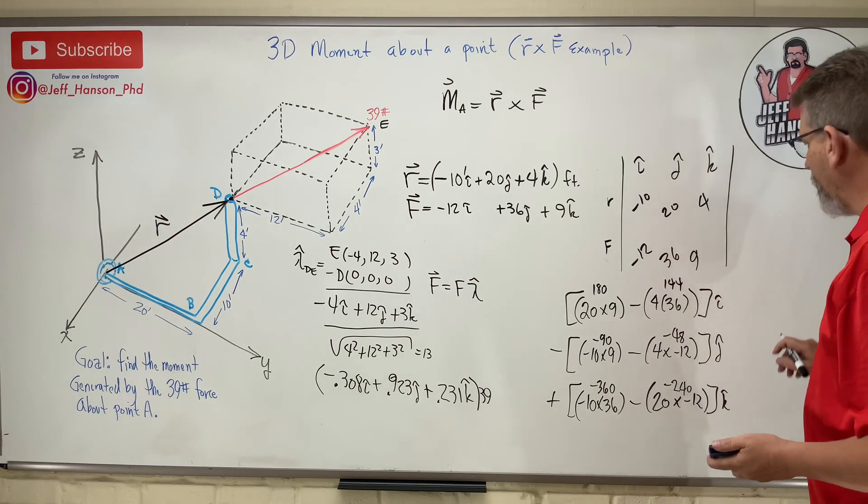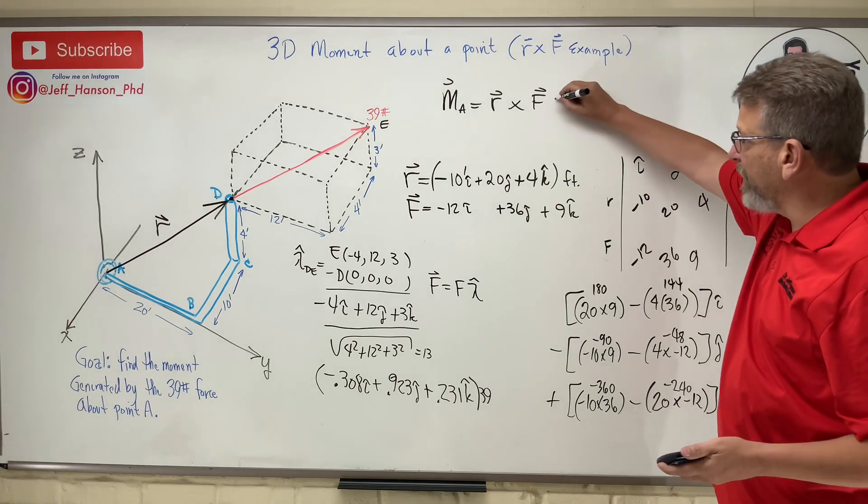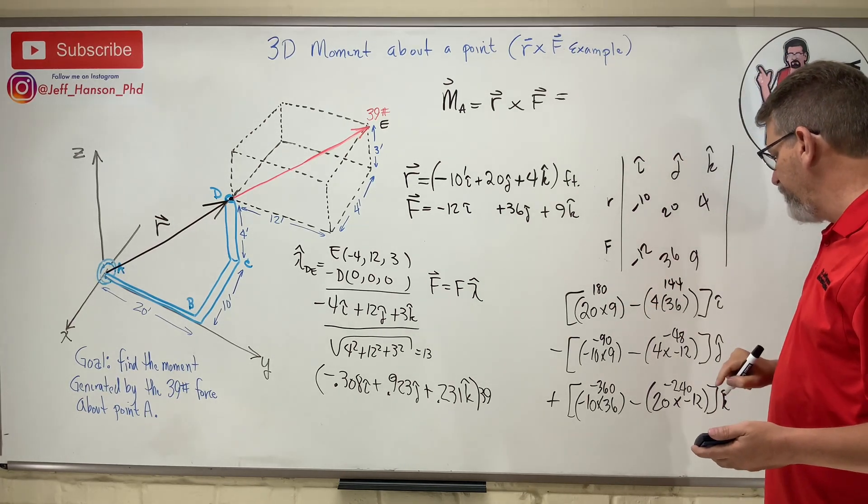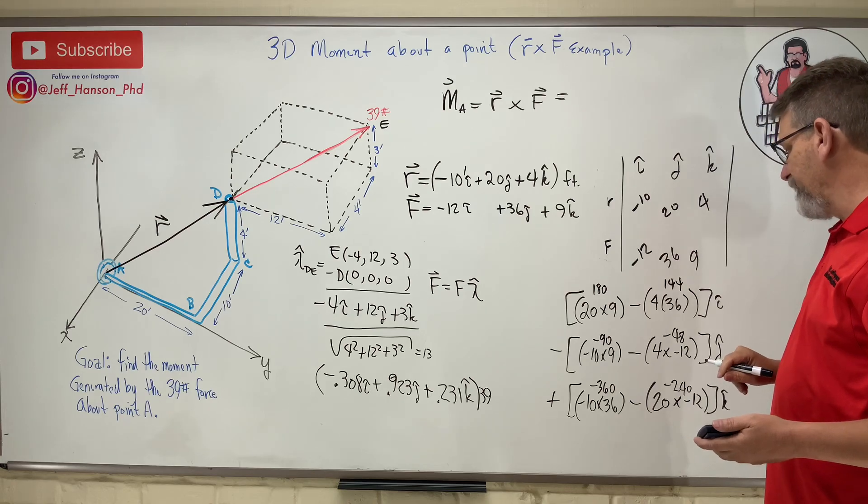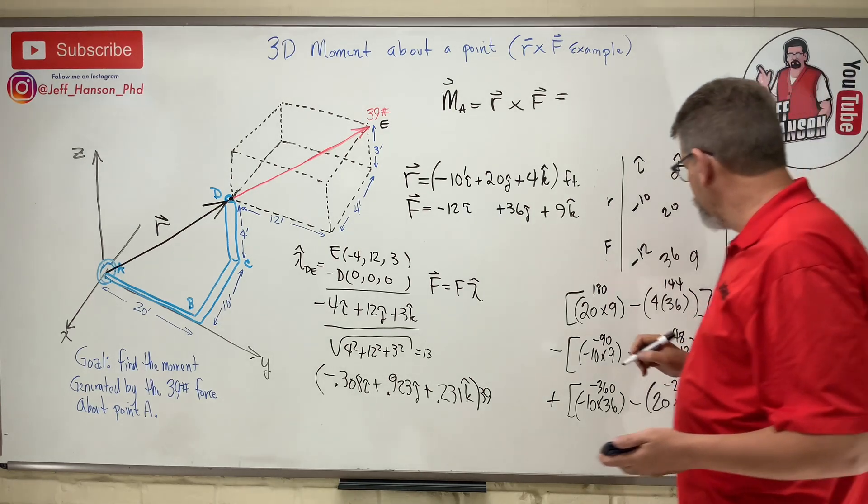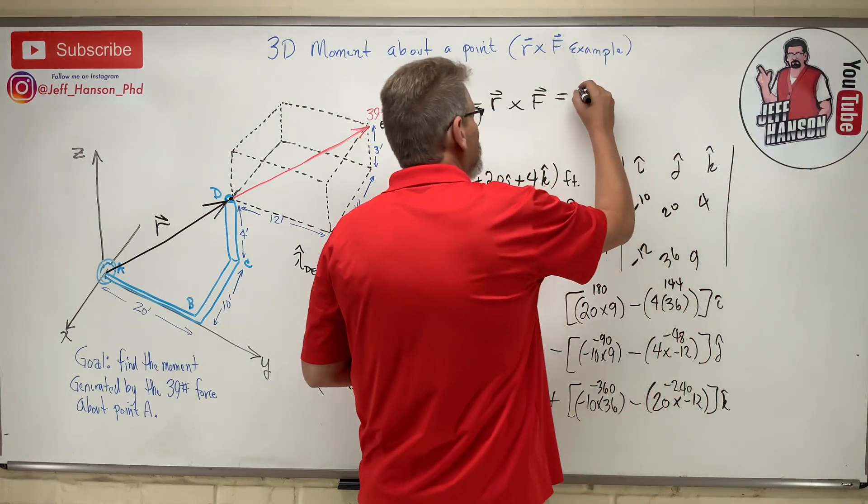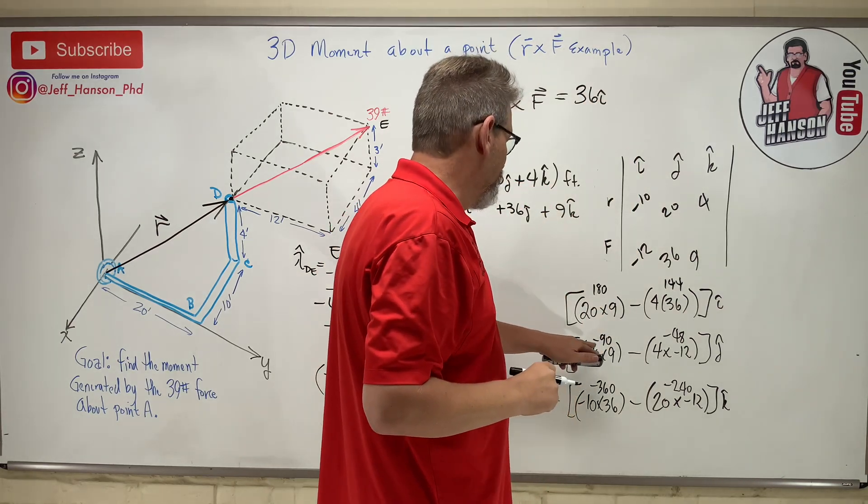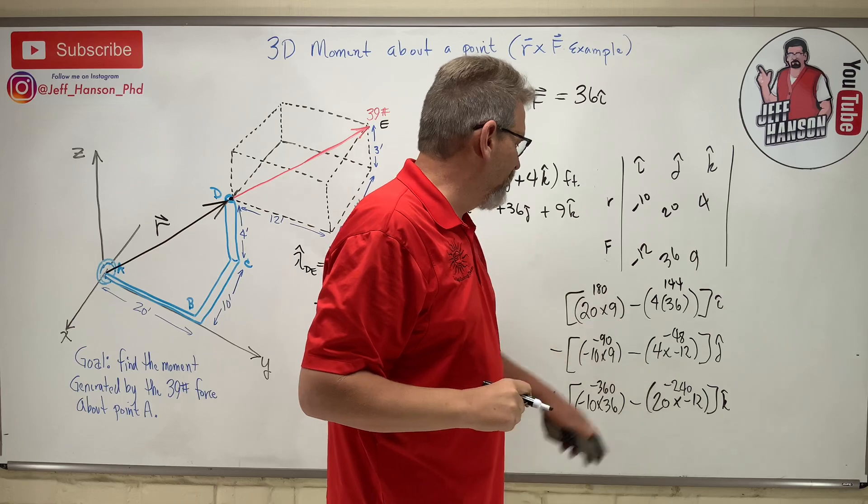So here we go, my final answer, the moment about point A is going to be what? 180 minus 144, that leaves us with 36. So 36 i-hat.